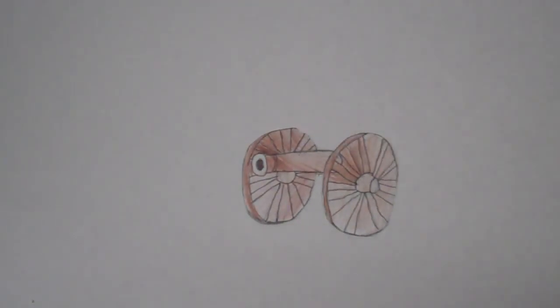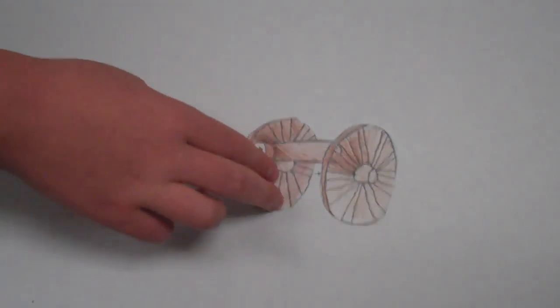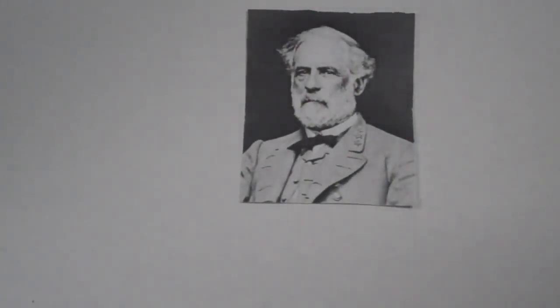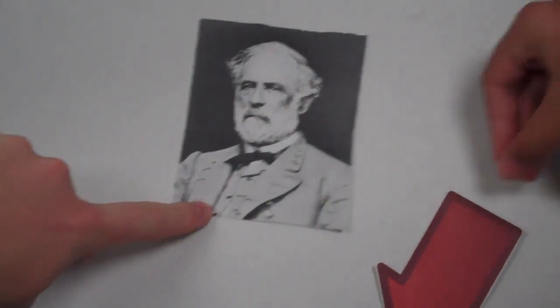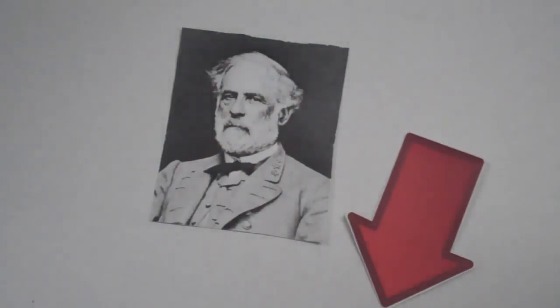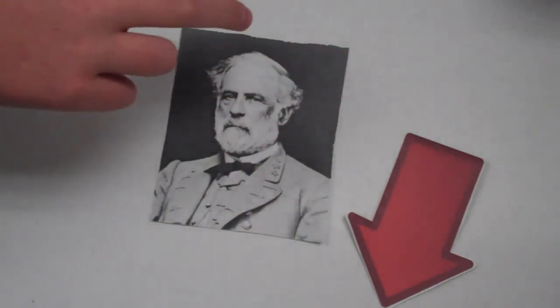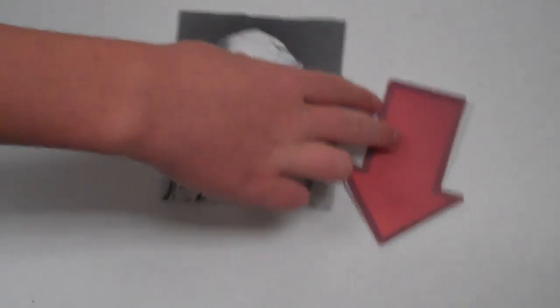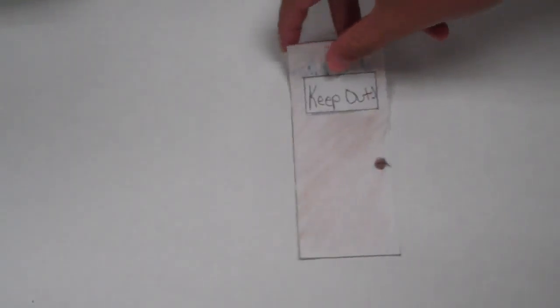Third, the Battle of Gettysburg can also be compared to siblings. Robert E. Lee's plan was to invade the area in which the battle would be fought. This can be compared to a brother taking away stuff from his sister's room to make her mad. The brother is invading or taking force into the sister's room.